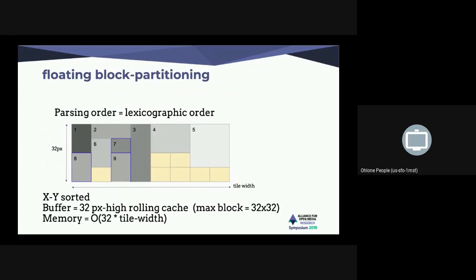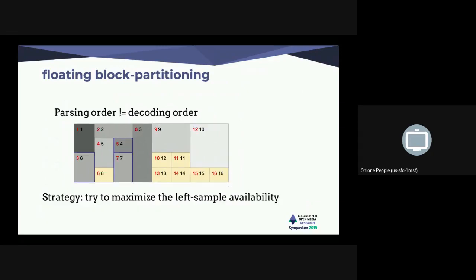With floating partitioning, there's an advantage: when you decode block number seven, you have some samples on the right that are already decoded. We want to exploit that to have more samples available at the boundary for better prediction. We can also use a different parsing order than the decoding order. You buffer the geometry, then decide which blocks to decode in which order to maximize left-sample availability. For example, you parse blocks four, five, and six when they don't have complete left samples, then flush and decode once all samples are available. It's a different parsing and decoding order to maximize sample availability.